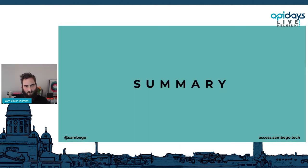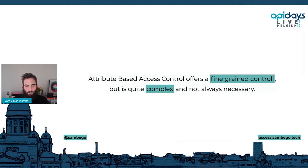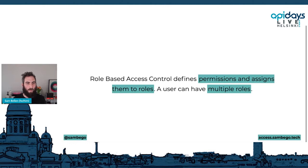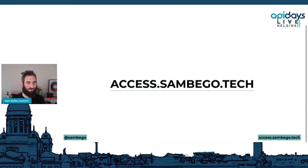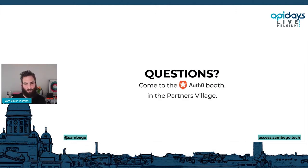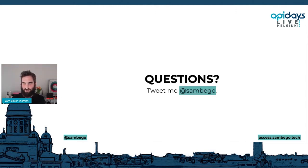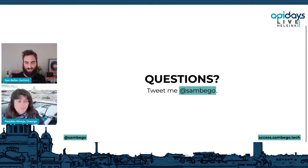To summarize: attribute-based access control offers fine-grained control but is quite complex and not always necessary — sometimes it's overkill. Role-based access control defines permissions and assigns them to roles; a user can have multiple roles and a role can have multiple permissions. Scopes come into play in delegation scenarios and should not be used for first-party APIs. You can find these slides at access.sambiga.tech, and feel free to reach out on Twitter or at the Auth0 booth.